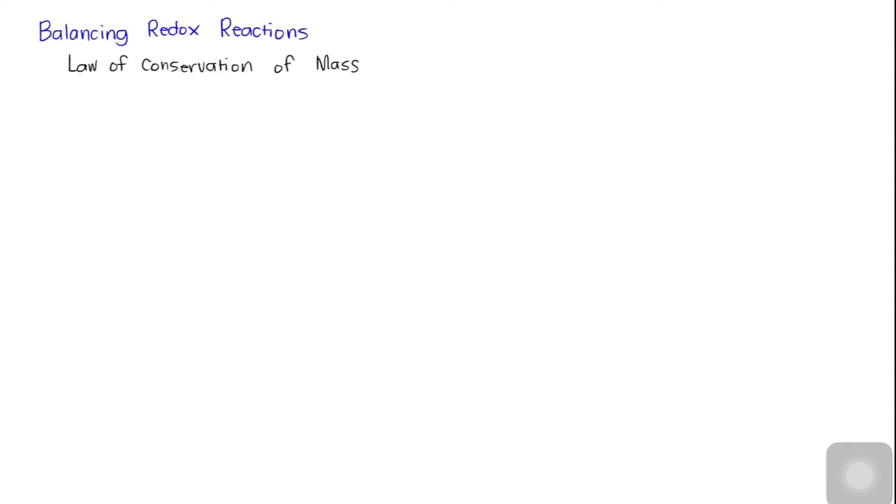Now that we have understood the basics of reduction and oxidation reactions, we will learn how to balance redox reactions. Redox reactions in aqueous solutions are often complicated, which means it can be difficult to balance their equations by simple inspection. But do not forget that whenever we balance any chemical equation, we must always obey the law of conservation of mass. In order to balance redox reactions, the number of electrons lost and gained must be taken into account. We will be examining the method of half-reactions, which is a systematic procedure for balancing redox equations.